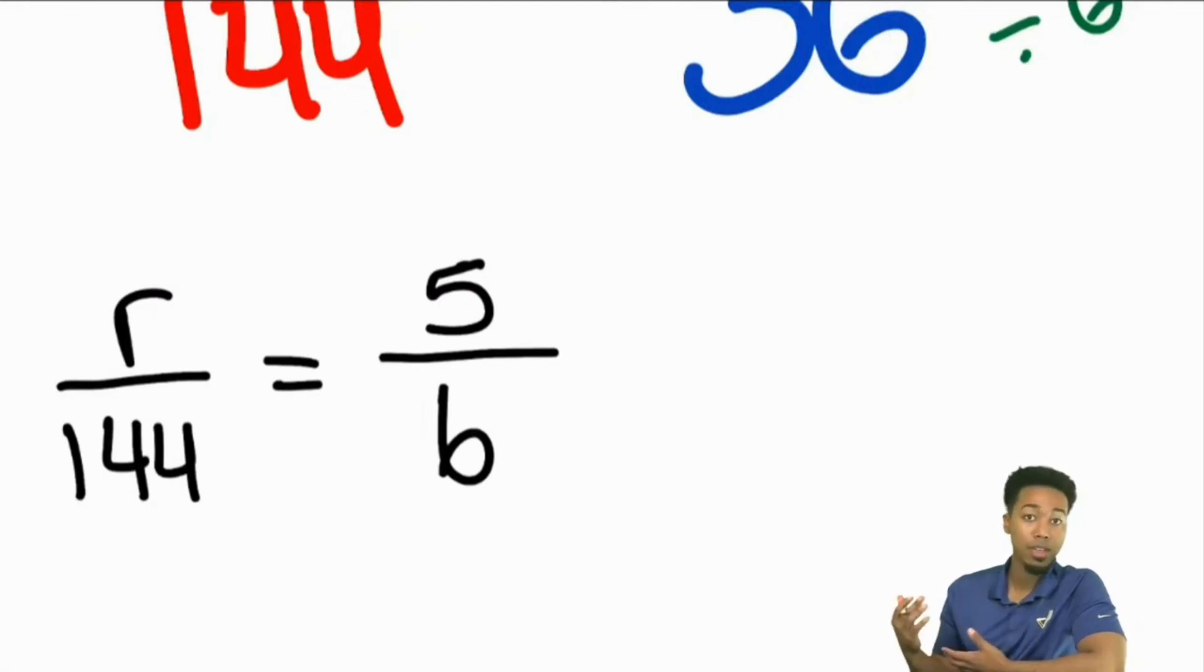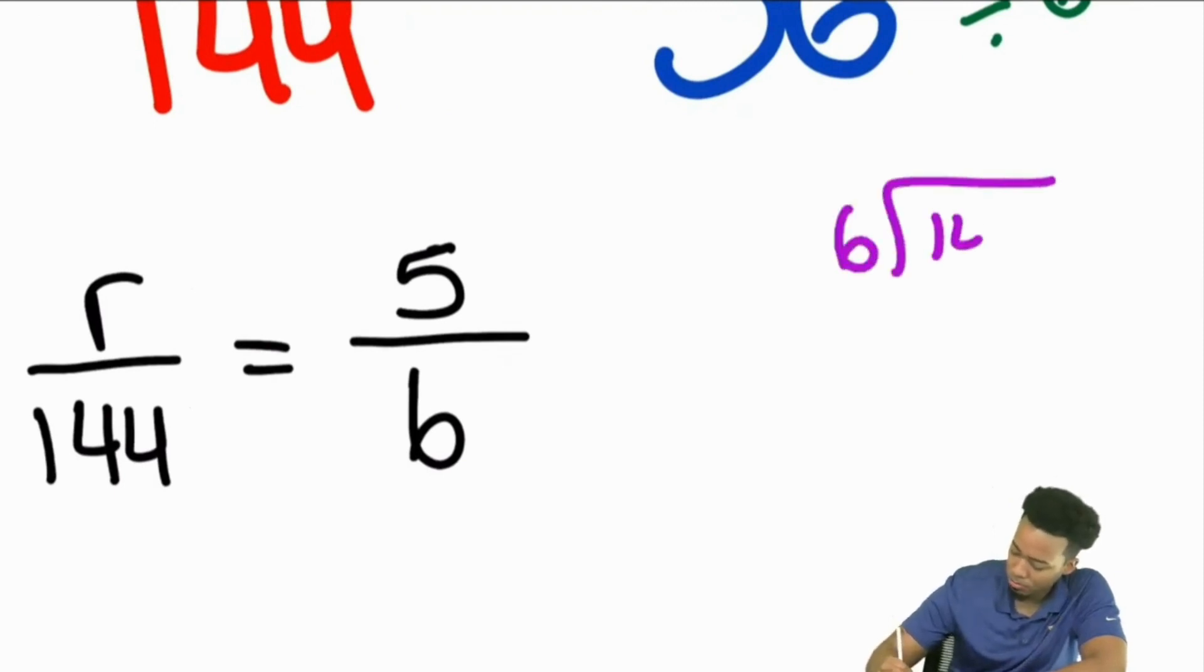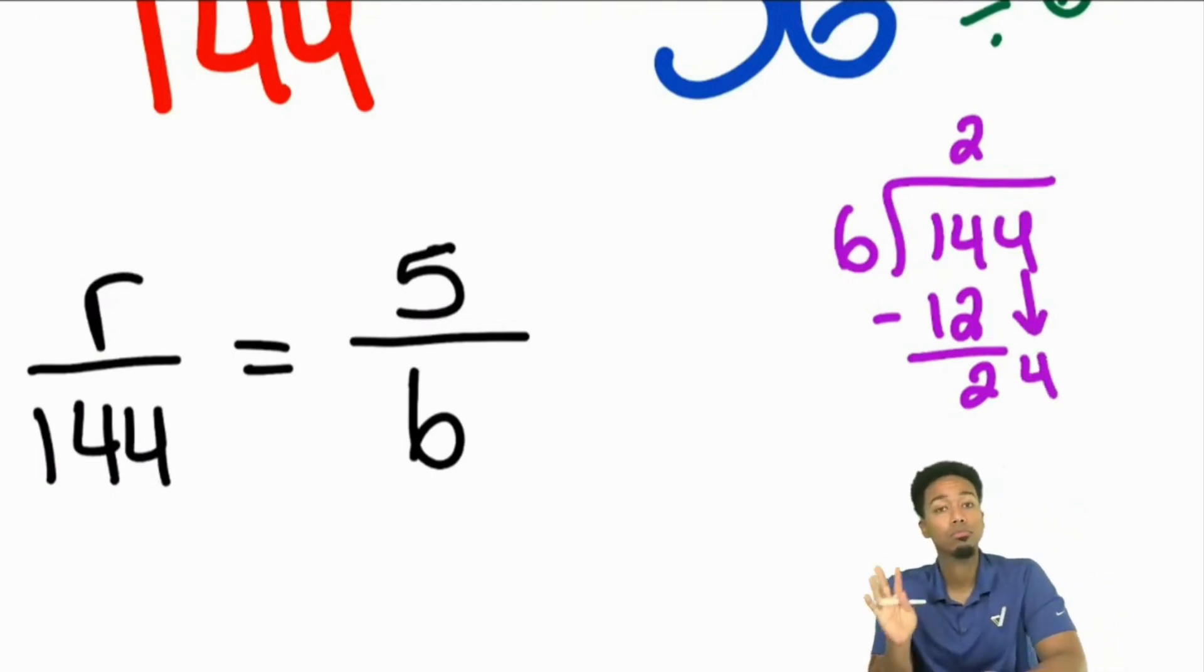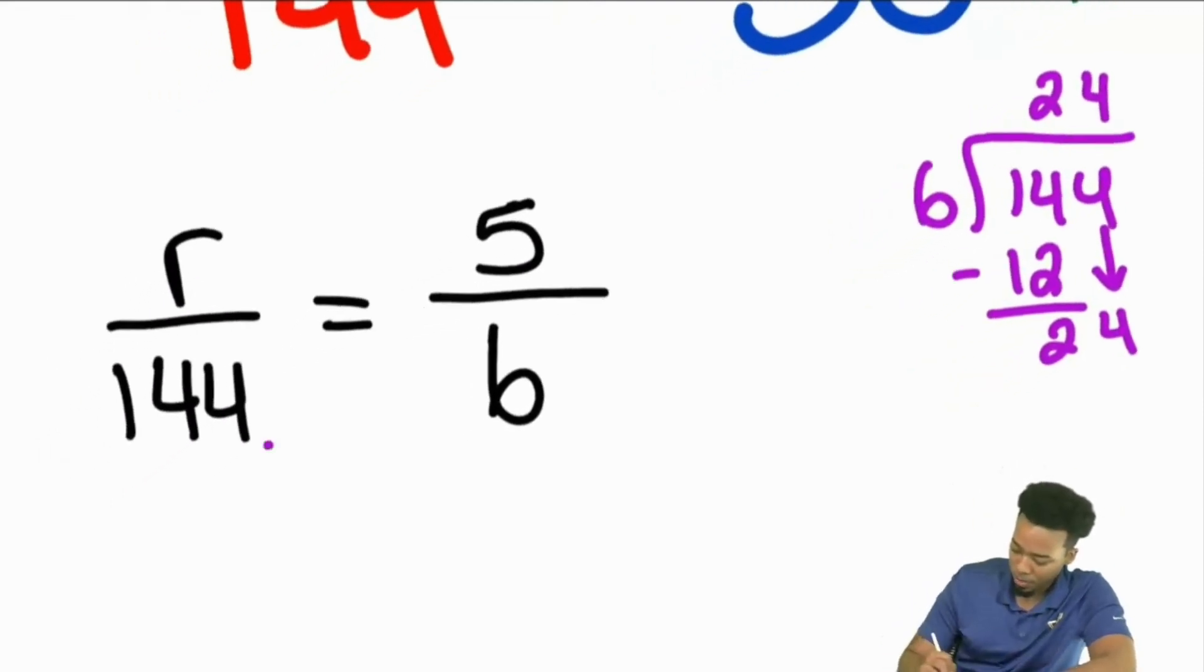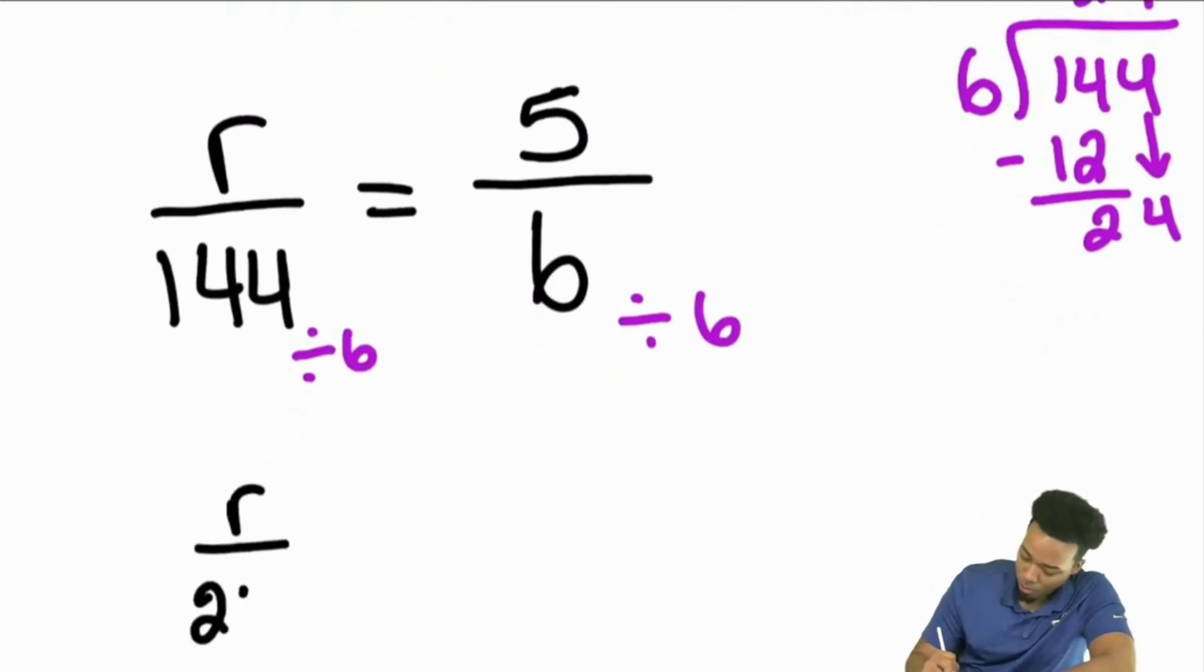But if you didn't know that with mental math at the top of your head, no worries. We can just go ahead and divide. It's all good. You can divide it quickly. Six goes into 144: six goes into 14 two times, six goes into 24 four times. And we're done. So right there, that would end up being if we divided both of these by six. Again, we're dividing both denominators by the same number. You're doing the same thing to both sides. You are allowed to do that, especially since it is division. And so you're good.